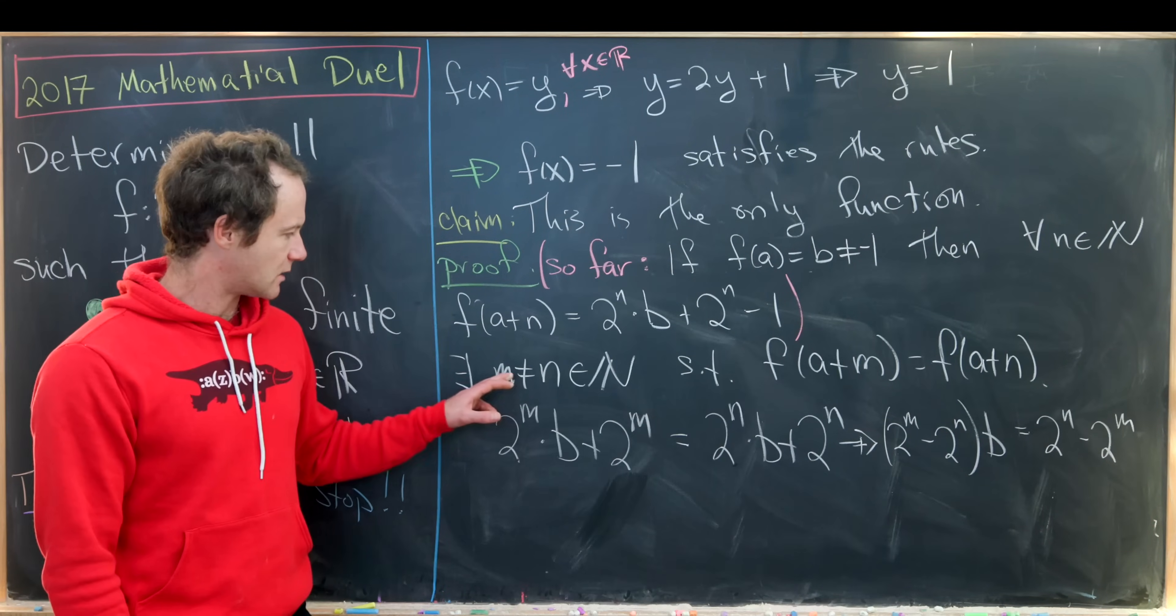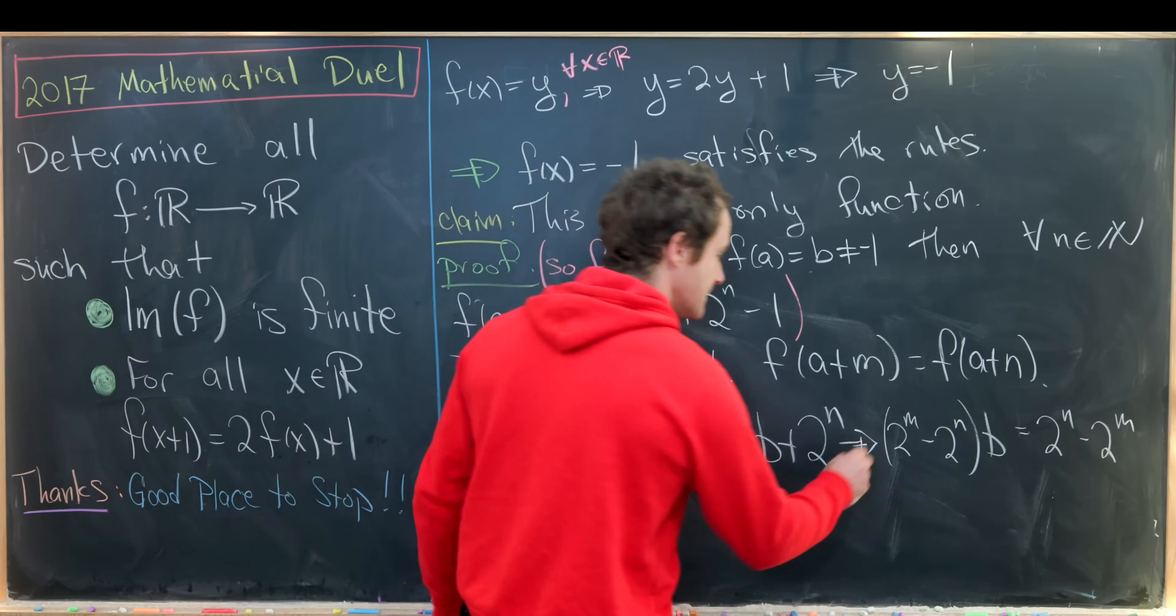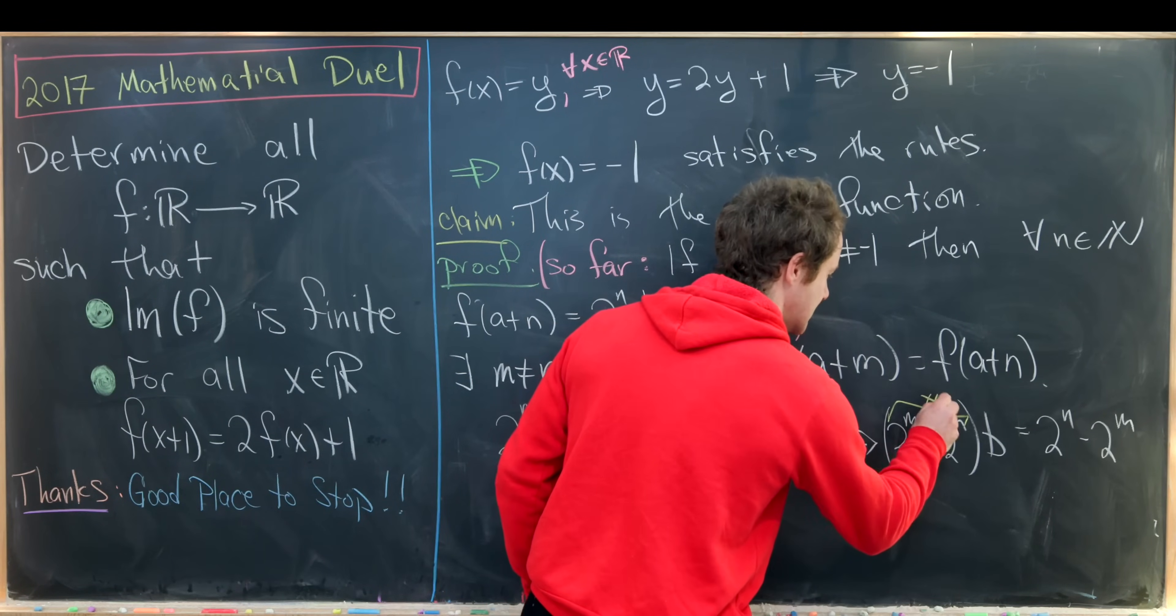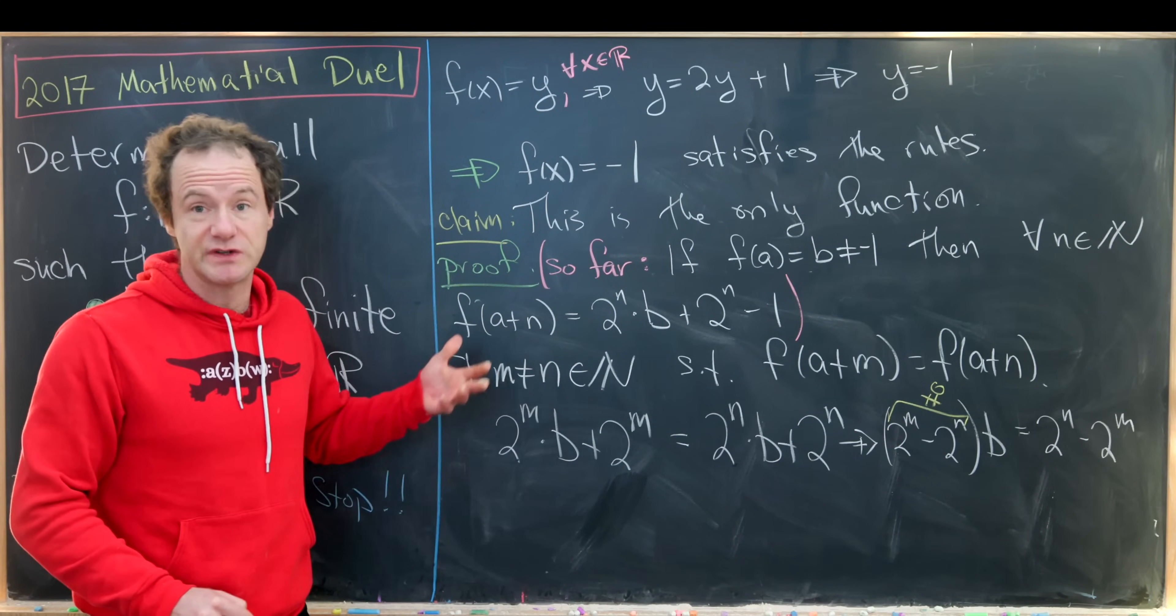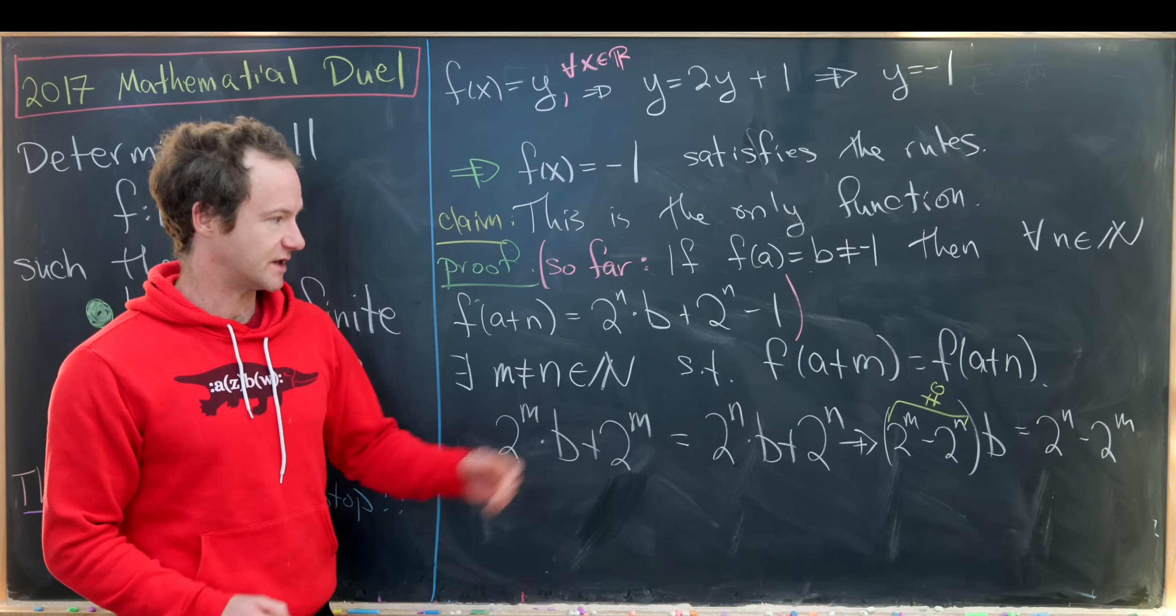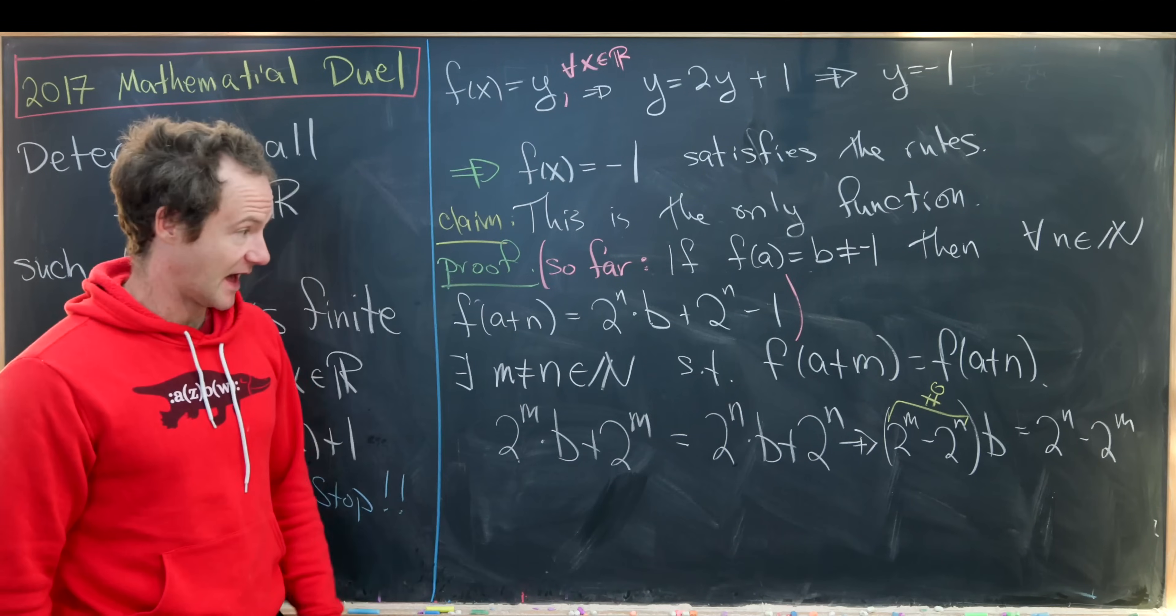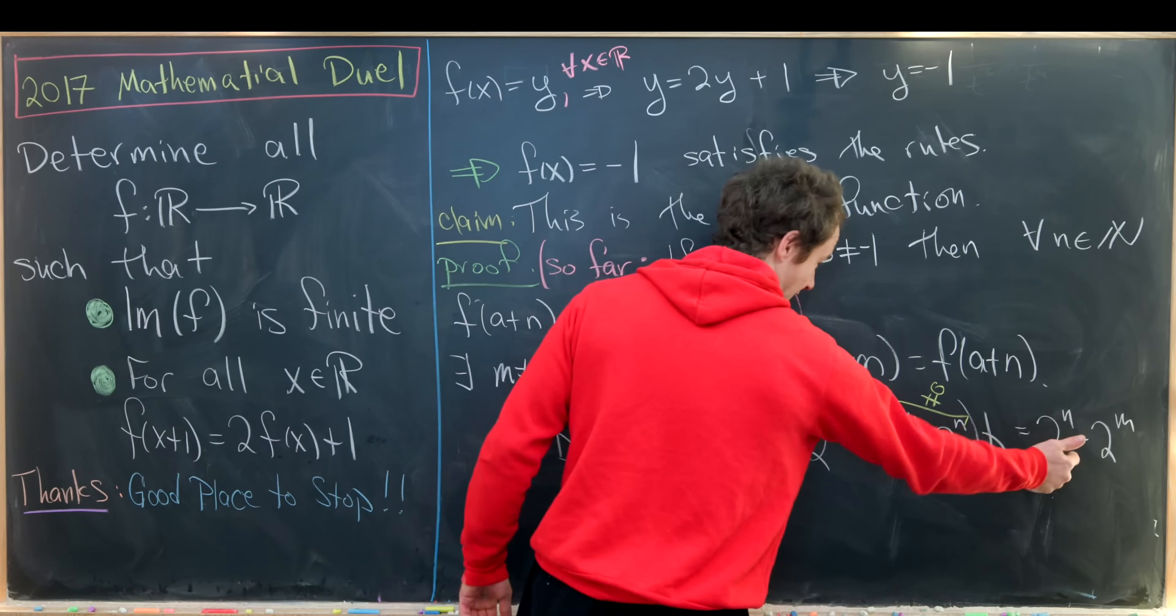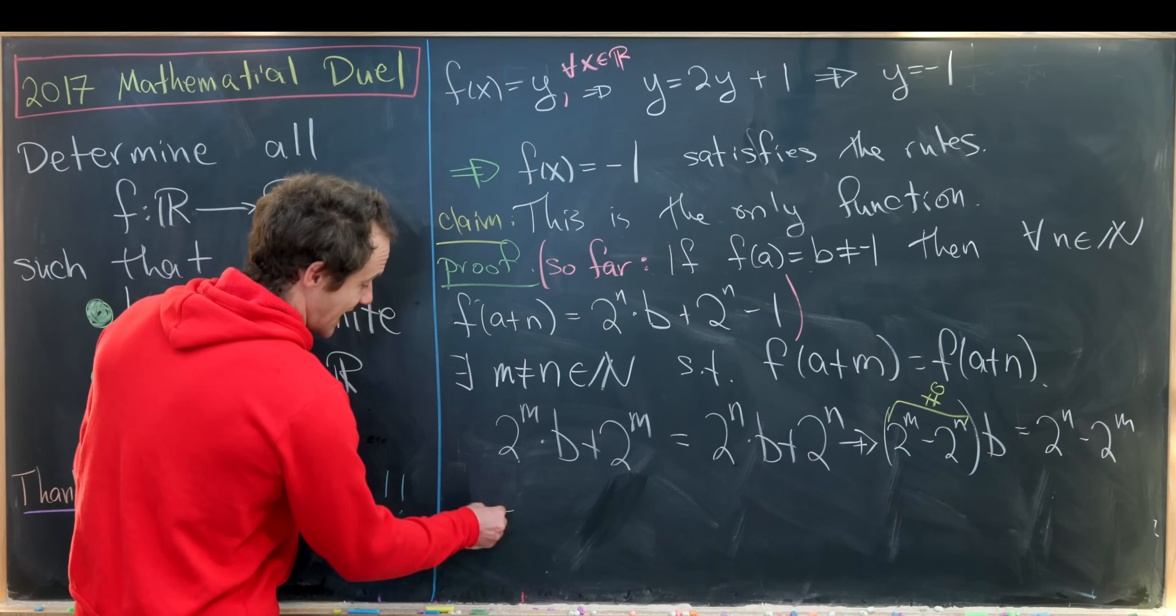But now our assumption is that m is not equal to n, but that means that this is not equal to zero. I think we can assume that this exponential function 2 to some power is injective, which is essentially what we're using here. But that means we can divide both sides by that. But notice over here on the right hand side we have negative this term, so that tells us